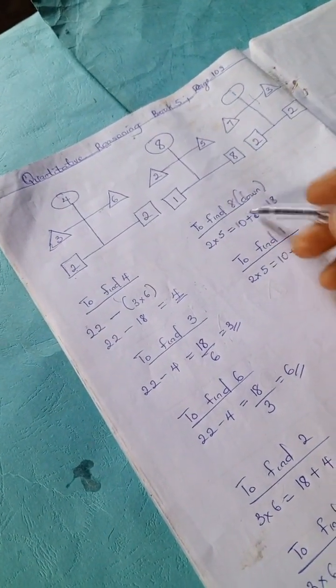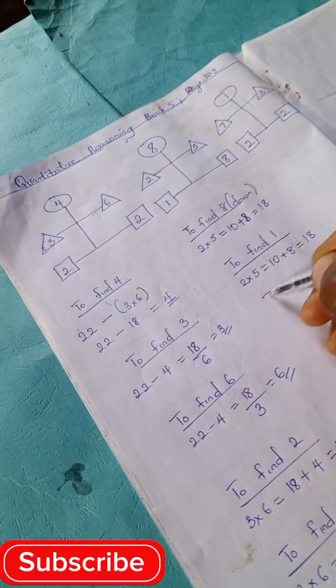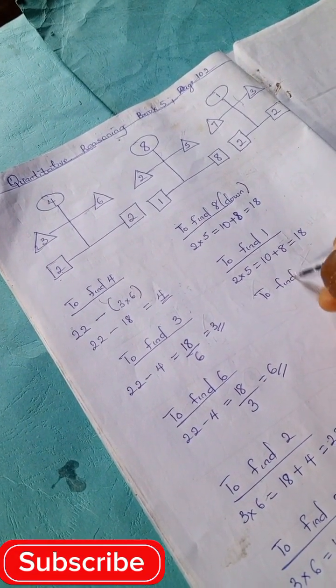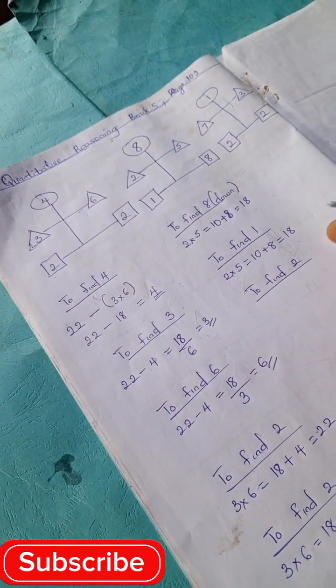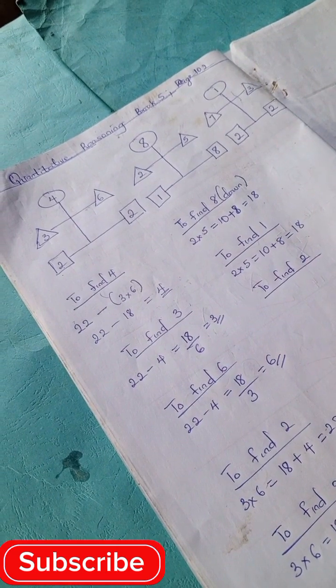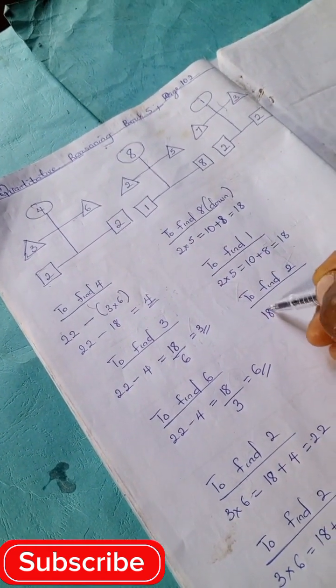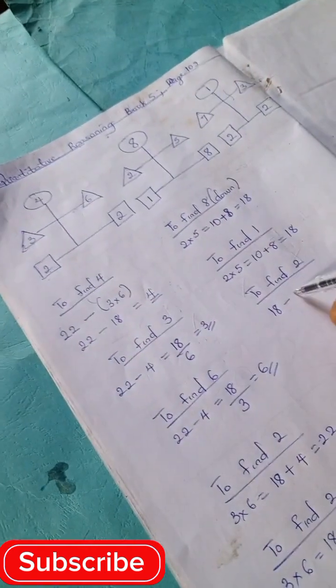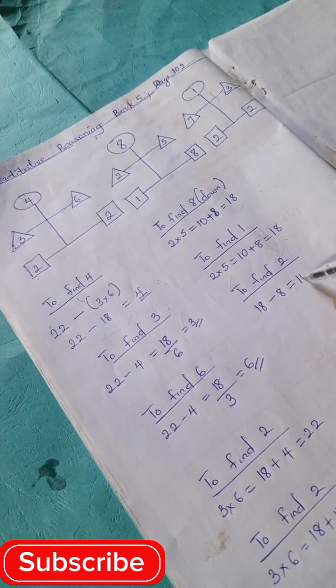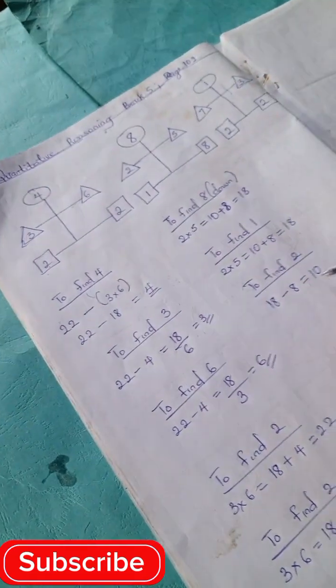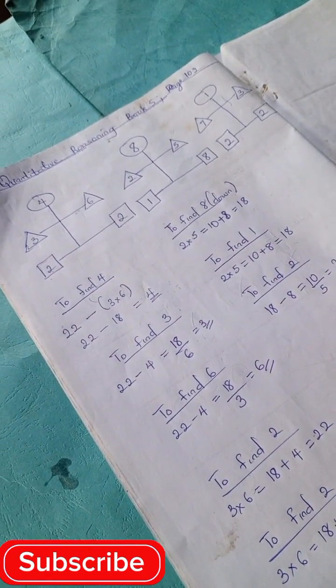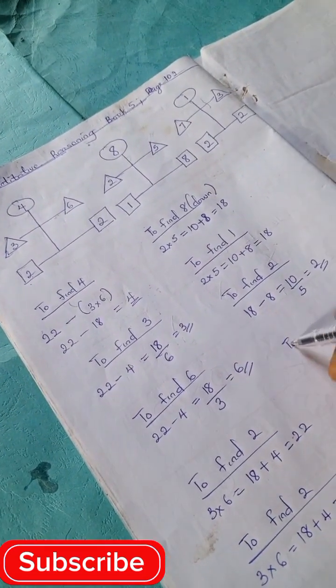Let's find the next one, let's find number 2. To find 2, we're going to have 18 minus 8 at the top, we have 10. So 10 divided by 5 is 2.